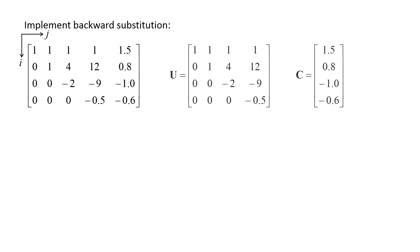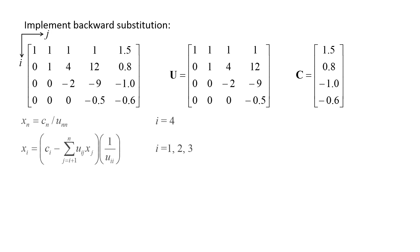We split the augmented matrix into an upper triangular matrix U and the column vector c. The U matrix is [1,1,1,1; 0,1,4,12; 0,0,-2,-9; 0,0,0,-0.5] and the c vector is [1.5, 0.8, -1, -0.6]. We now apply the backward substitution equations. Since there are four linear equations, n equals 4. For i equal to 4, we use x4 equals c4 divided by u44: negative 0.6 divided by negative 0.5 gives x4 = 1.2.